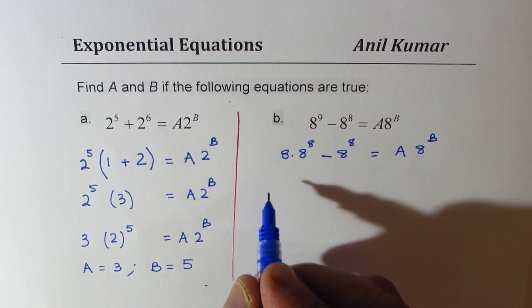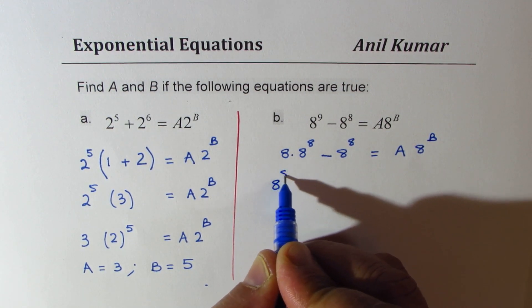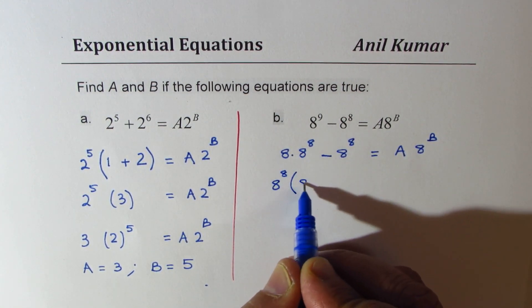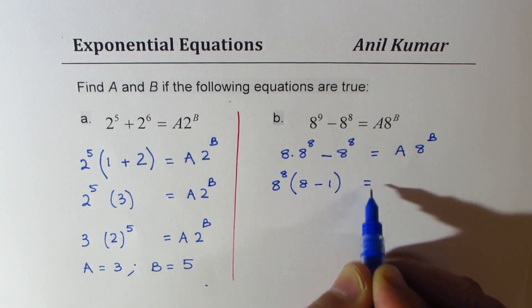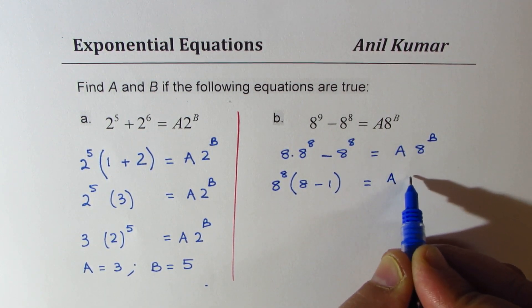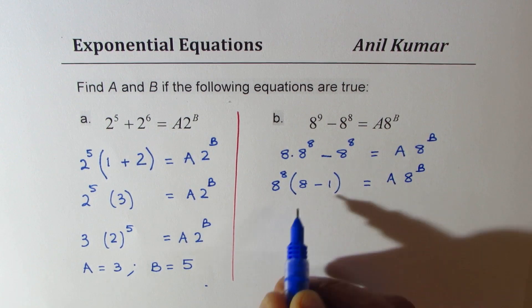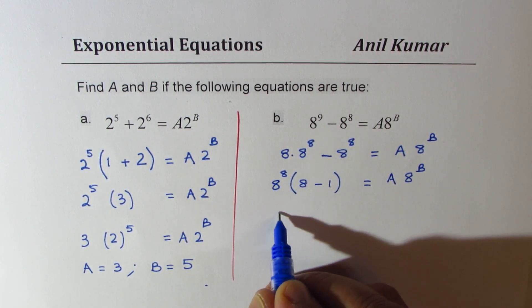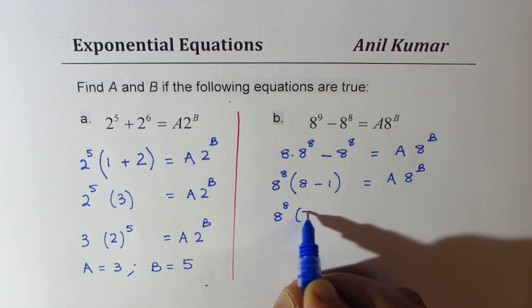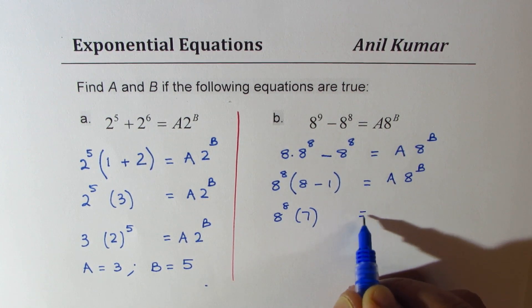Now on the left side, I could take 8^8 as a common factor, getting 8 - 1. So it results into 7 × 8^8.